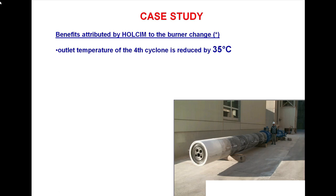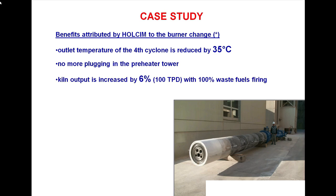Results: outlet temperature of the earth cyclone is reduced by 35 degrees. No more plugging in the preheater tower. Cyclone output is increased by 6% under TPD with 100% waste fuel firing. No more CO at kiln inlet, even with 100% waste fuel firing.